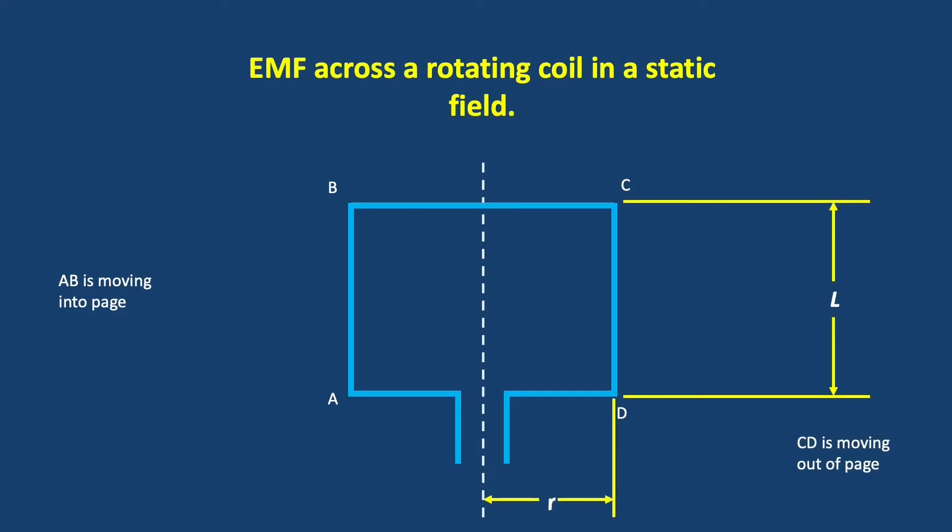Our coil is a rectangle. It has CD side length equal to L, and it has BC side length equal to 2R, where R is the distance from the axis of rotation to the side of the coil.